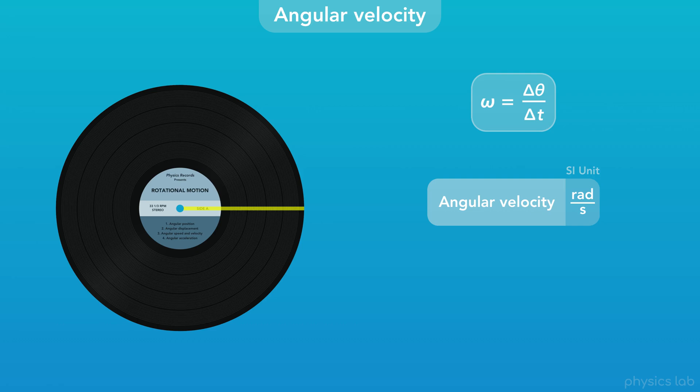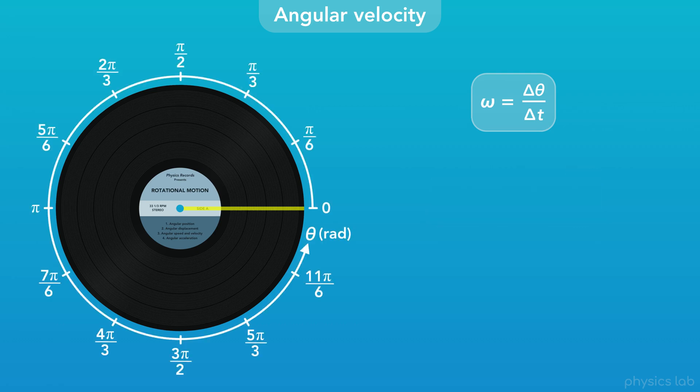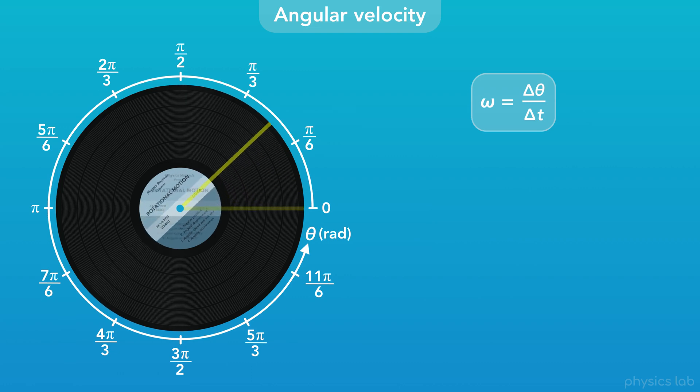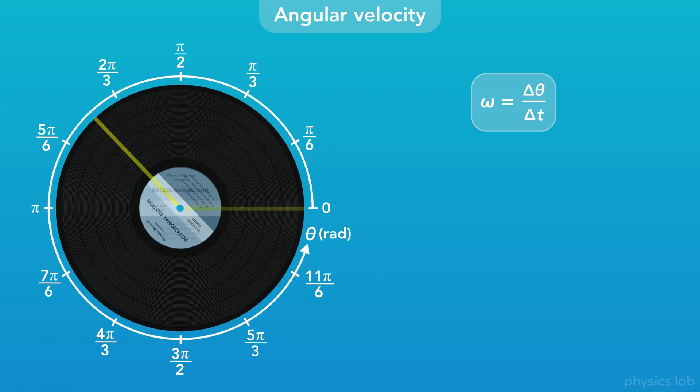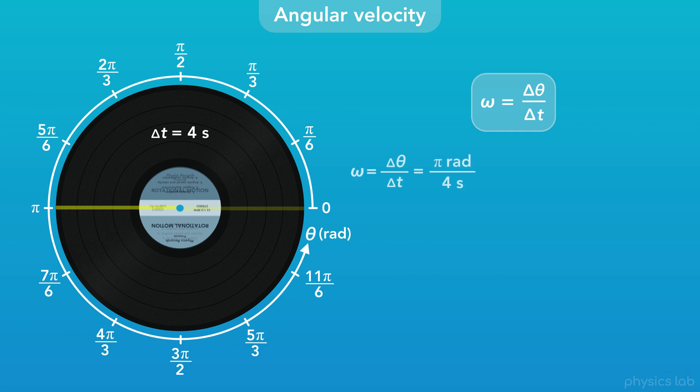So let's change the units on our axis to radians. If this record rotates half of a revolution in 4 seconds, then the angular velocity of the record was pi radians divided by 4 seconds, or pi over 4 radians per second. That's about 0.79 radians per second in decimal form.